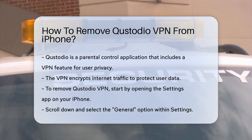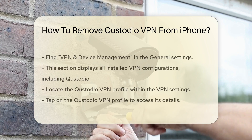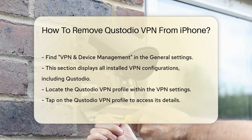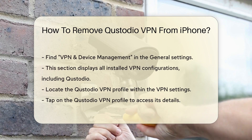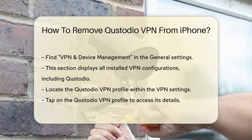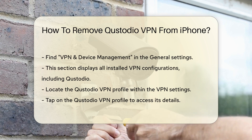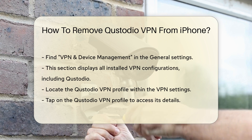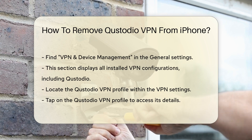navigate to your device's Settings app. Scroll down and select General. Within the General settings, find VPN and Device Management. This section lists all installed VPN configurations, including Custodio.